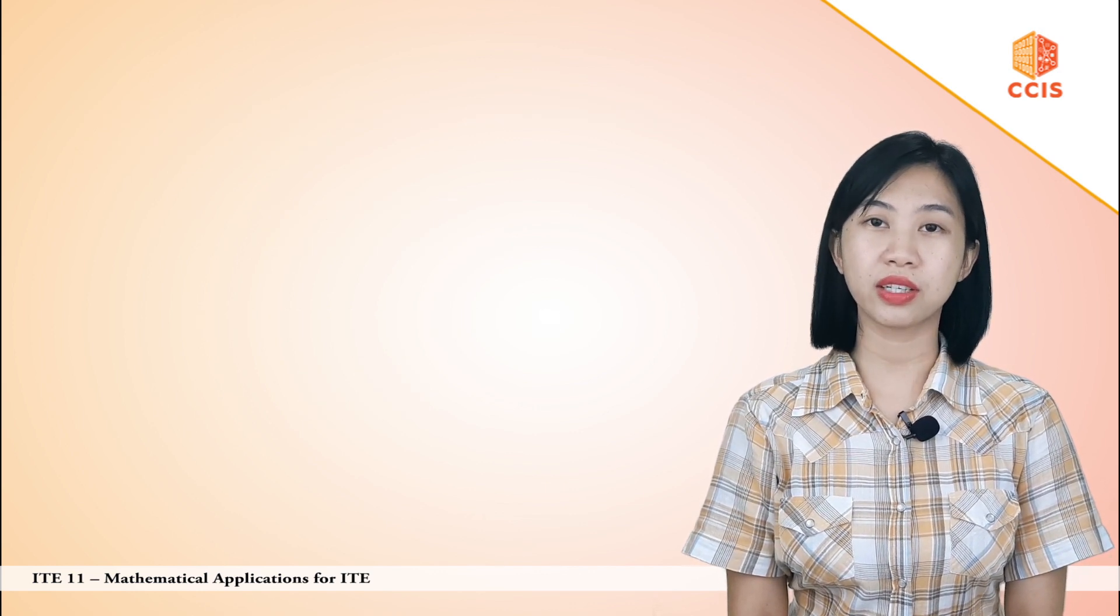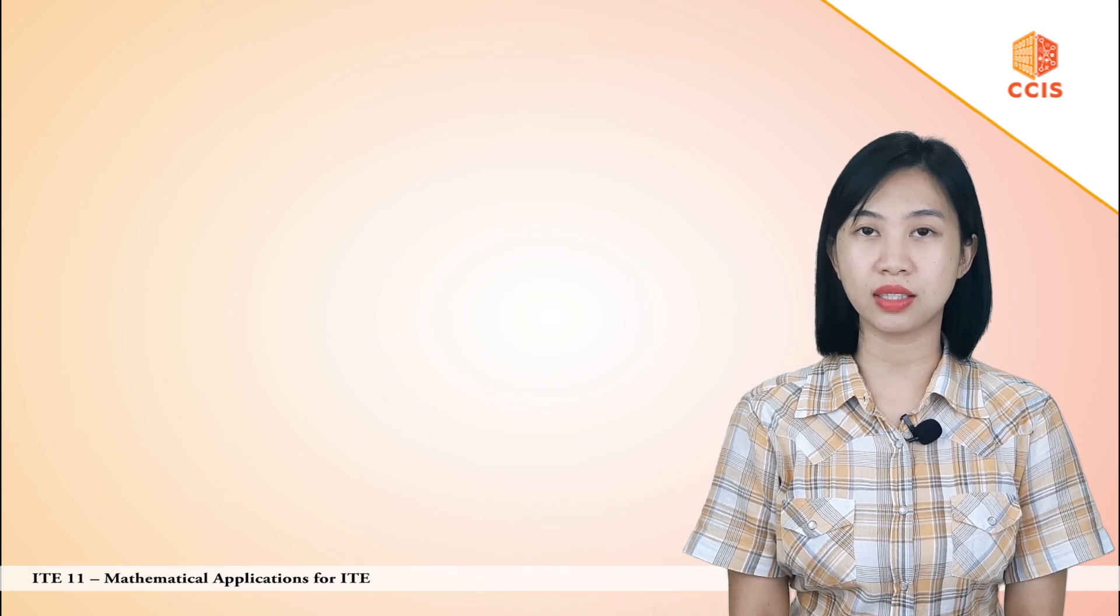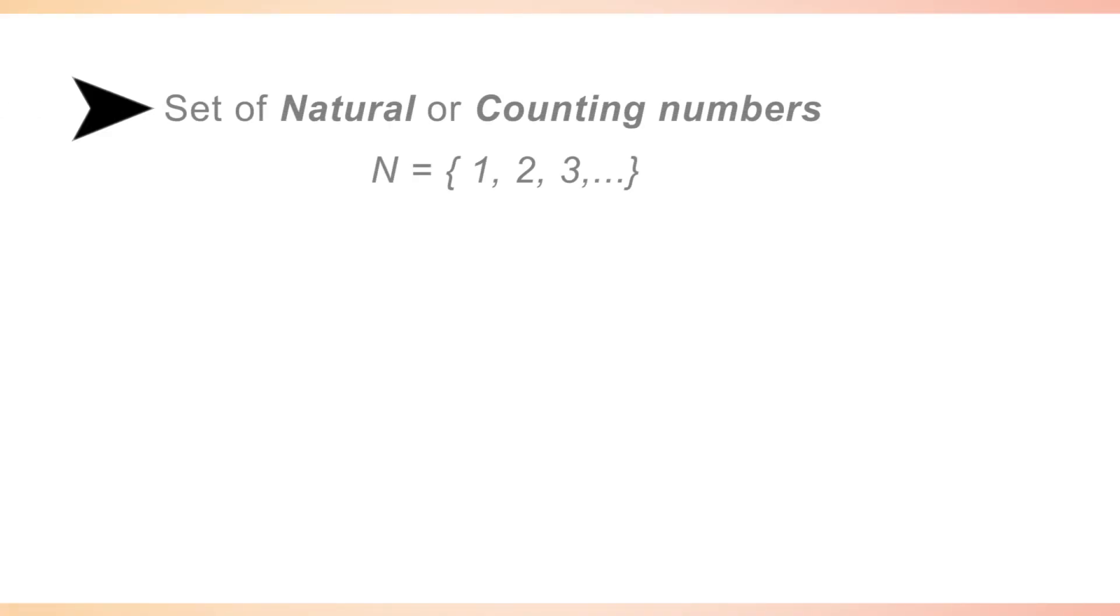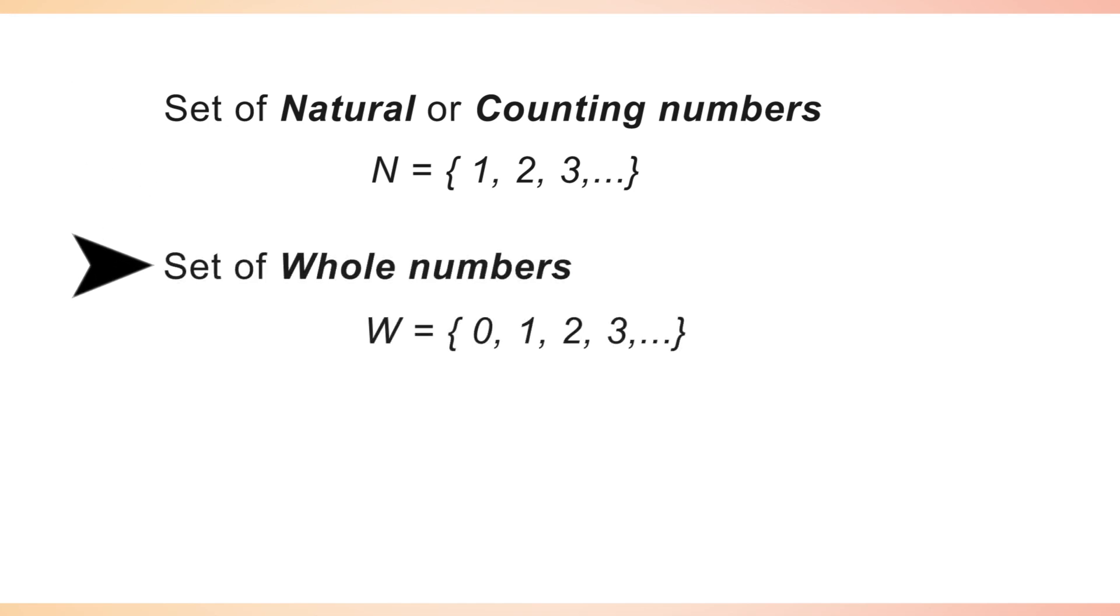Some numbers in the rational numbers have their own sets such as the set of natural numbers or counting numbers. The set of all counting numbers with 0 is called the set of whole numbers. The set of all whole numbers with negative numbers are called as the set of all integers.